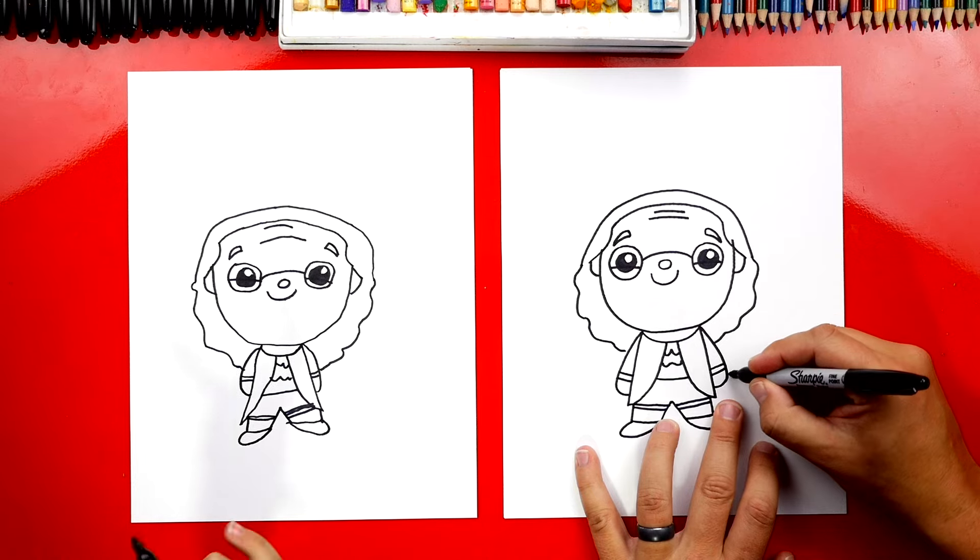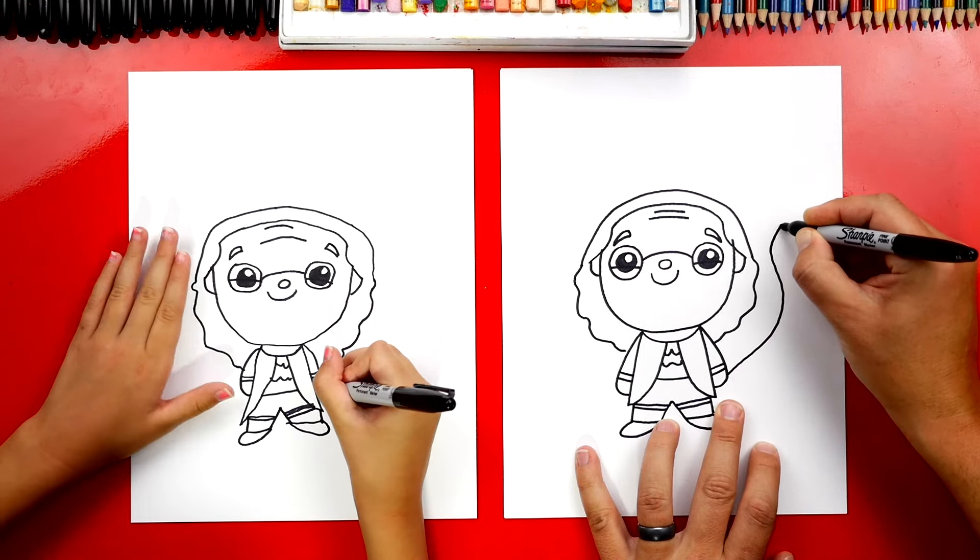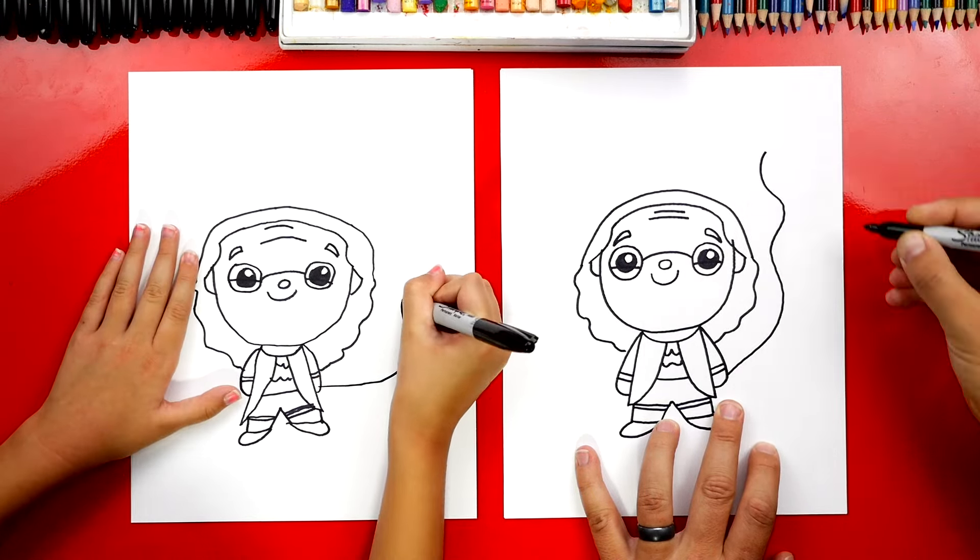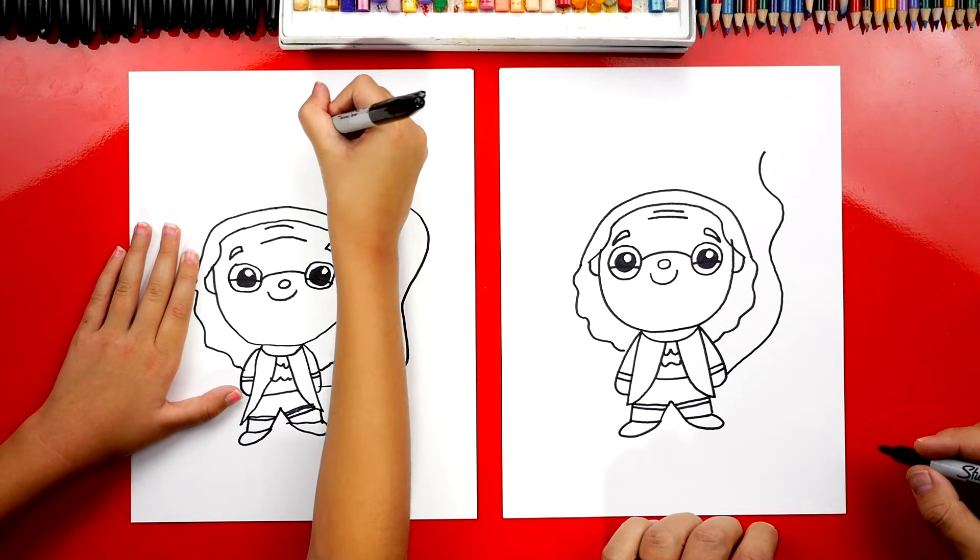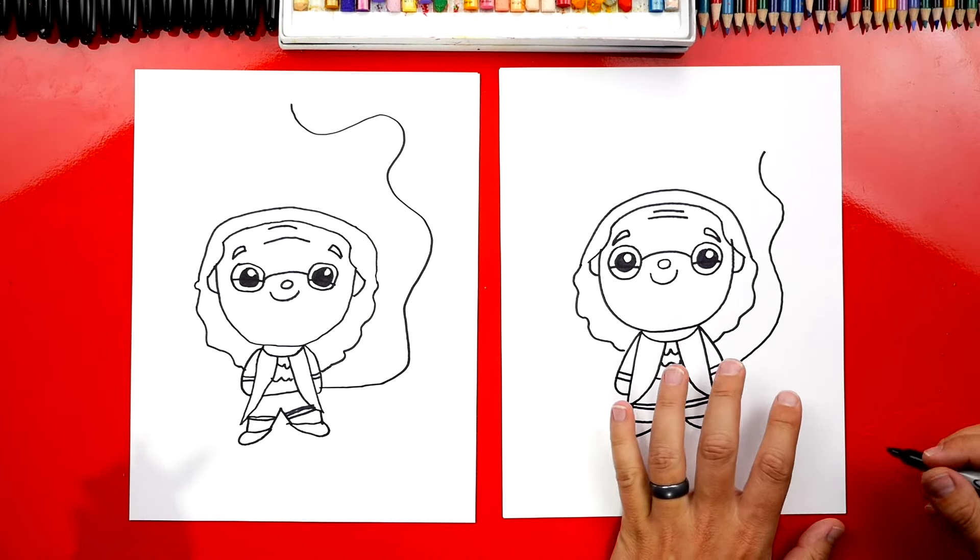Now he looks like Ben Franklin. But we could draw something else so that we really know that it's Benjamin Franklin. What should we draw? The kite. Kite with the key? Yes.